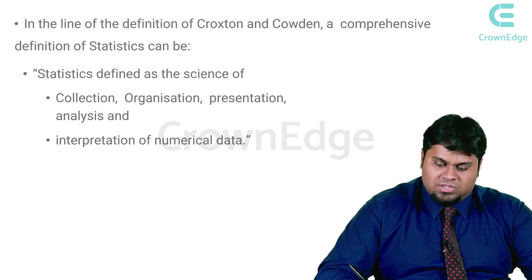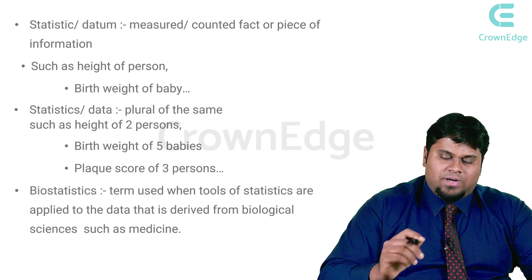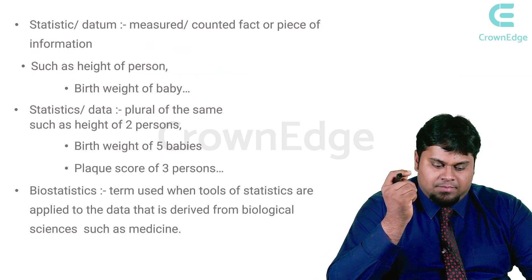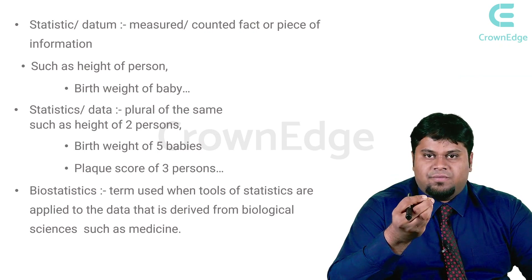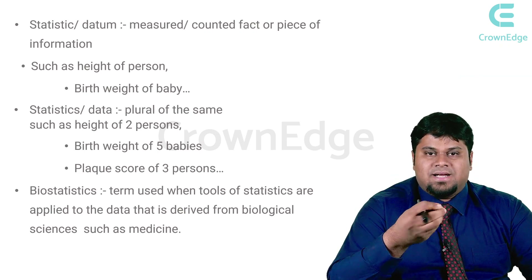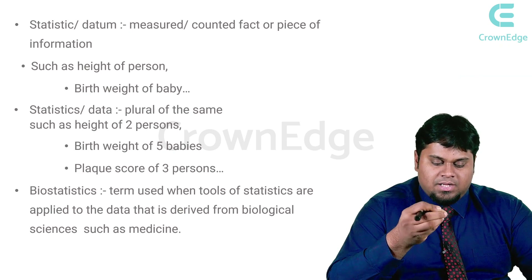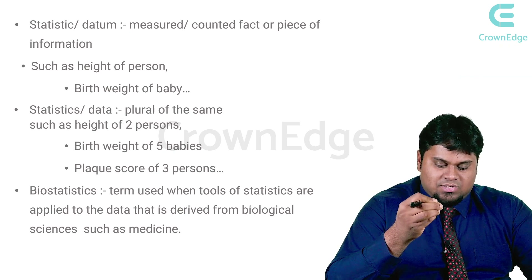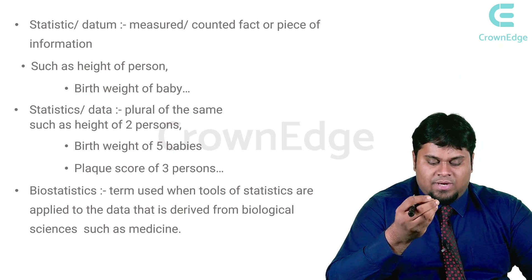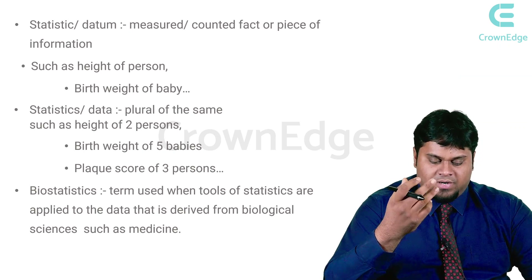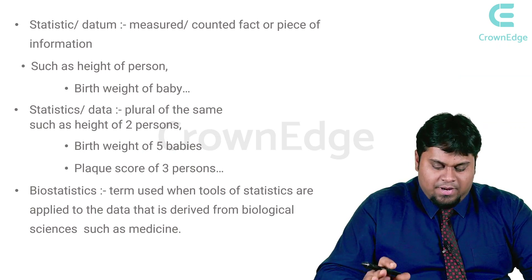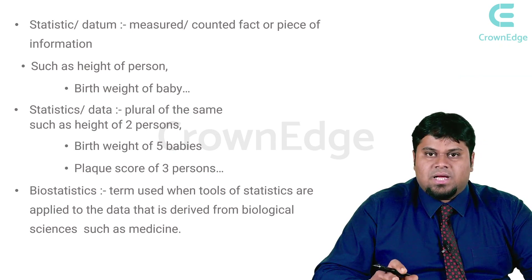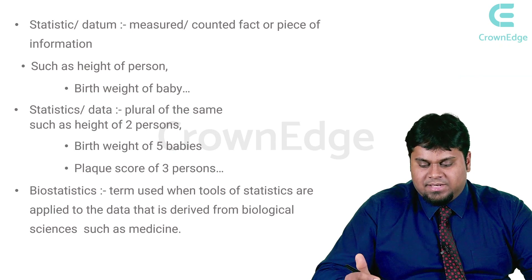A statistic or datum is anything which can be measured or counted — it is a piece of information. For example, the birth weight of a baby is a statistic. Statistics or data is the plural form, such as the height of two people or the birth weight of five babies. Biostatistics is the term when the methods of statistics are applied to data derived from the biological sciences, like medicine.